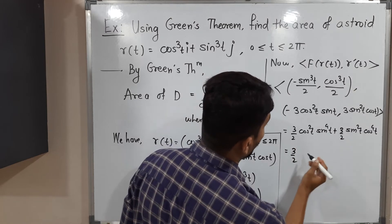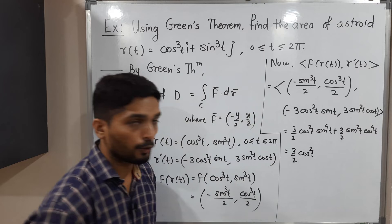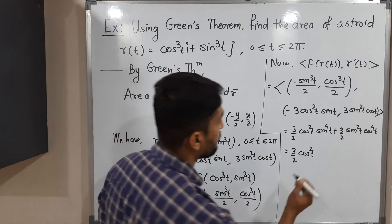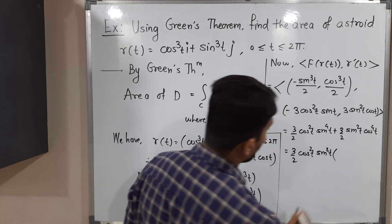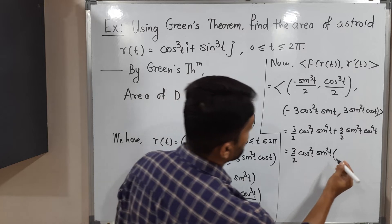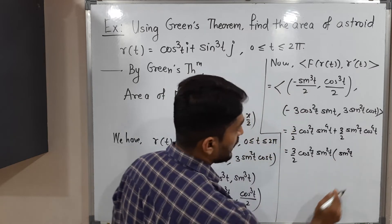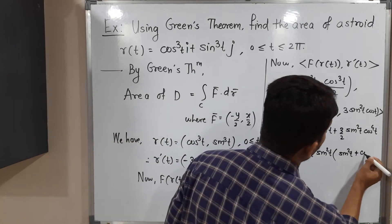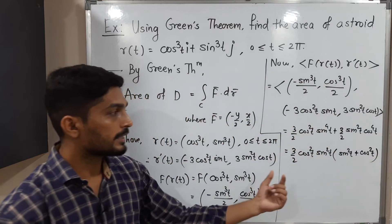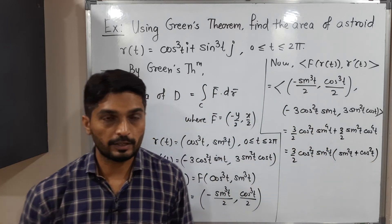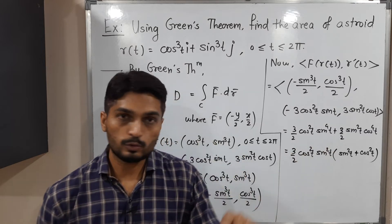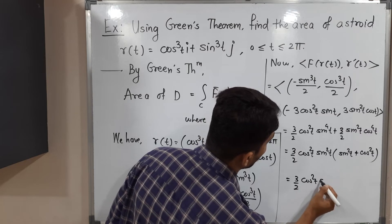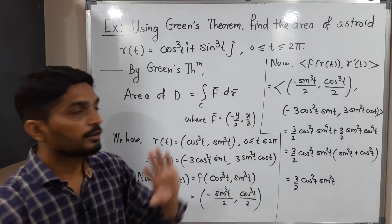Factoring 3/2 out, we can also take cos²t common from the first term and sin²t common from the second term. This leaves sin²t + cos²t inside the bracket, which equals 1. So the inner product simplifies to (3/2)cos²t·sin²t.